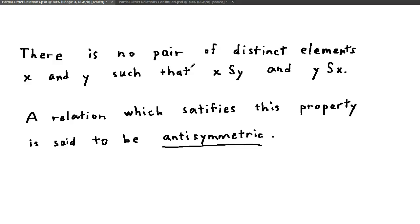There is no pair of distinct elements x and y such that x S y and y S x. A relation which satisfies this property is said to be antisymmetric.